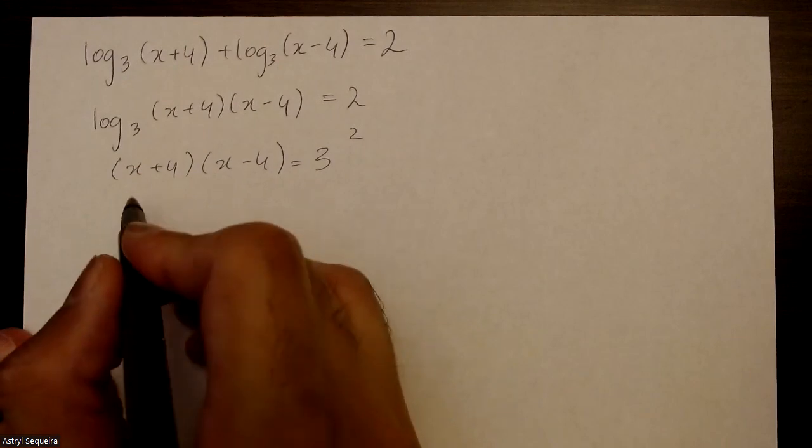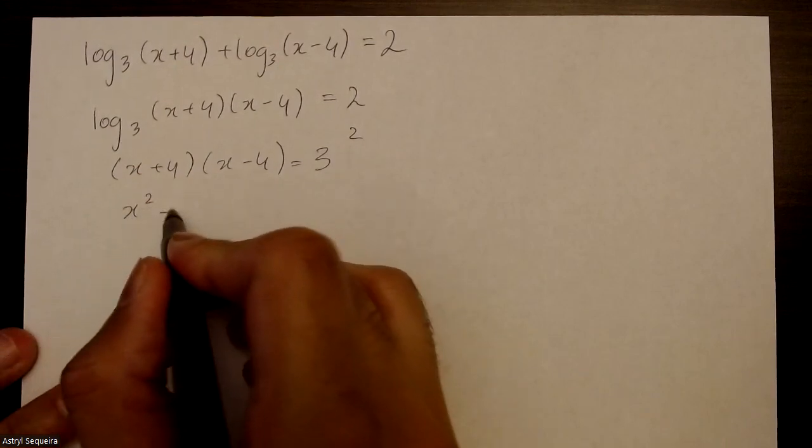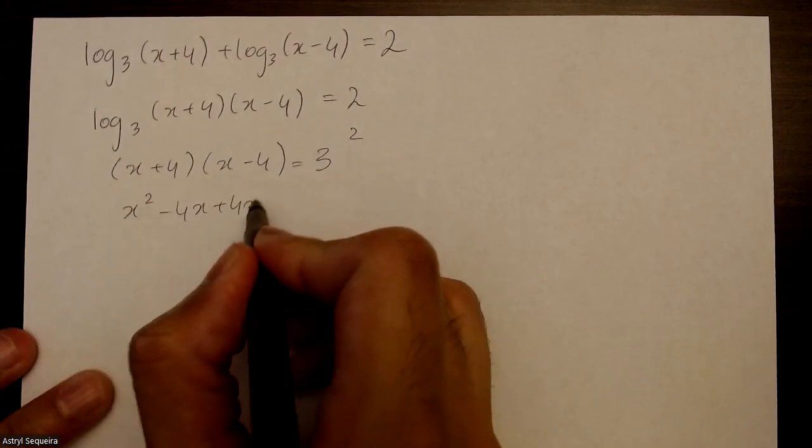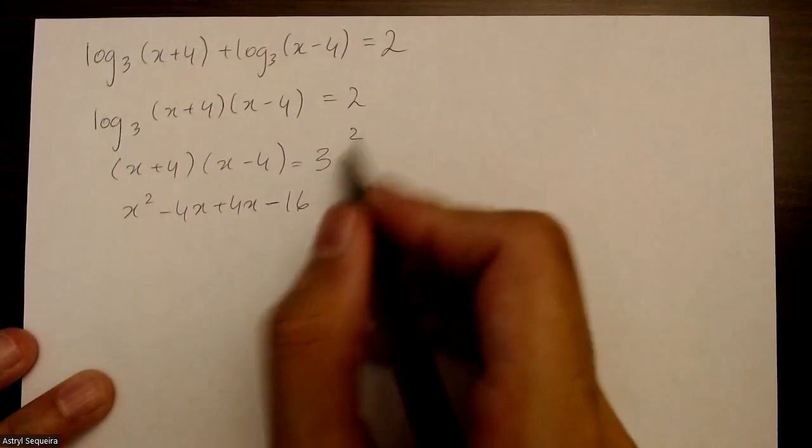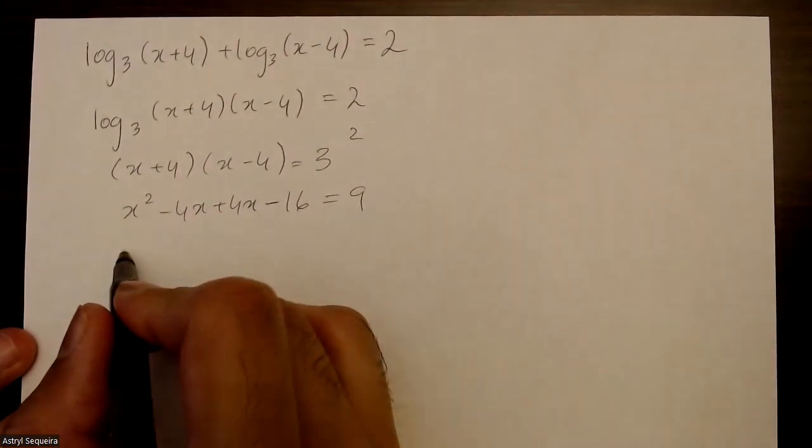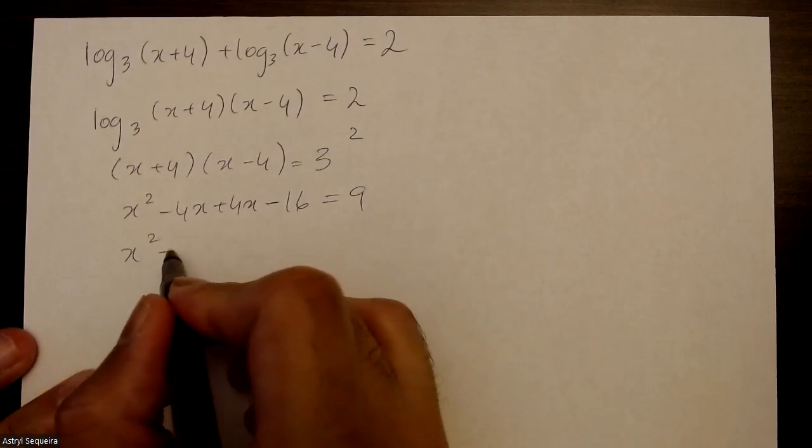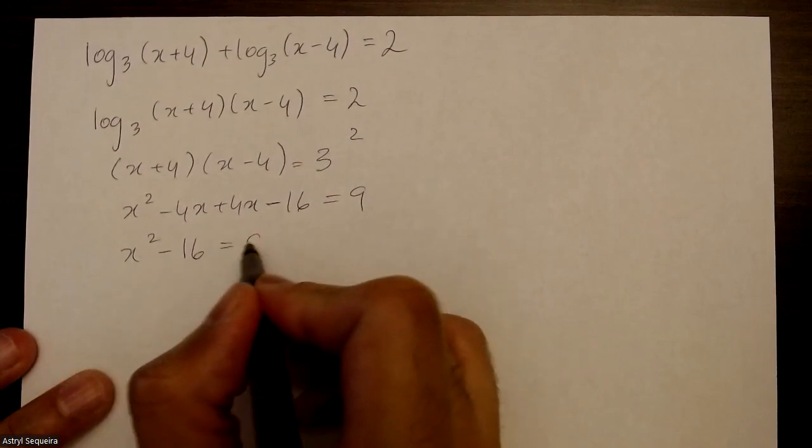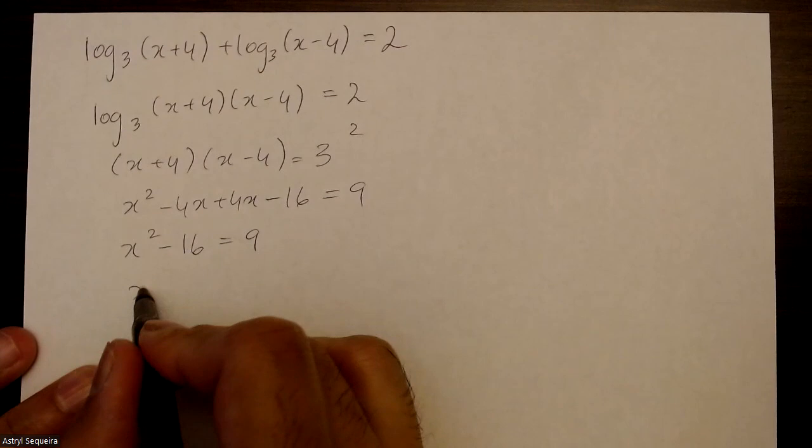I'm going to foil out these two brackets, so x squared minus 4x plus 4x minus 16, and 3 squared is just 9. So that's x squared minus 16 equals 9. I'll bring the 9 to this side, so x squared minus 25 equals 0.